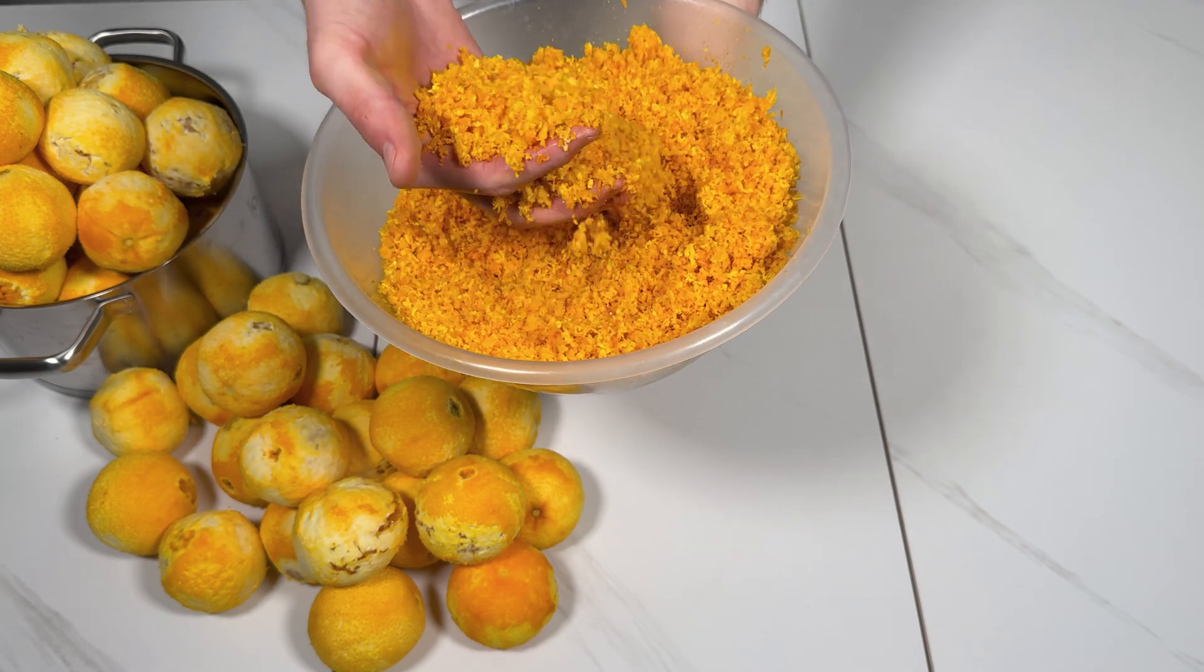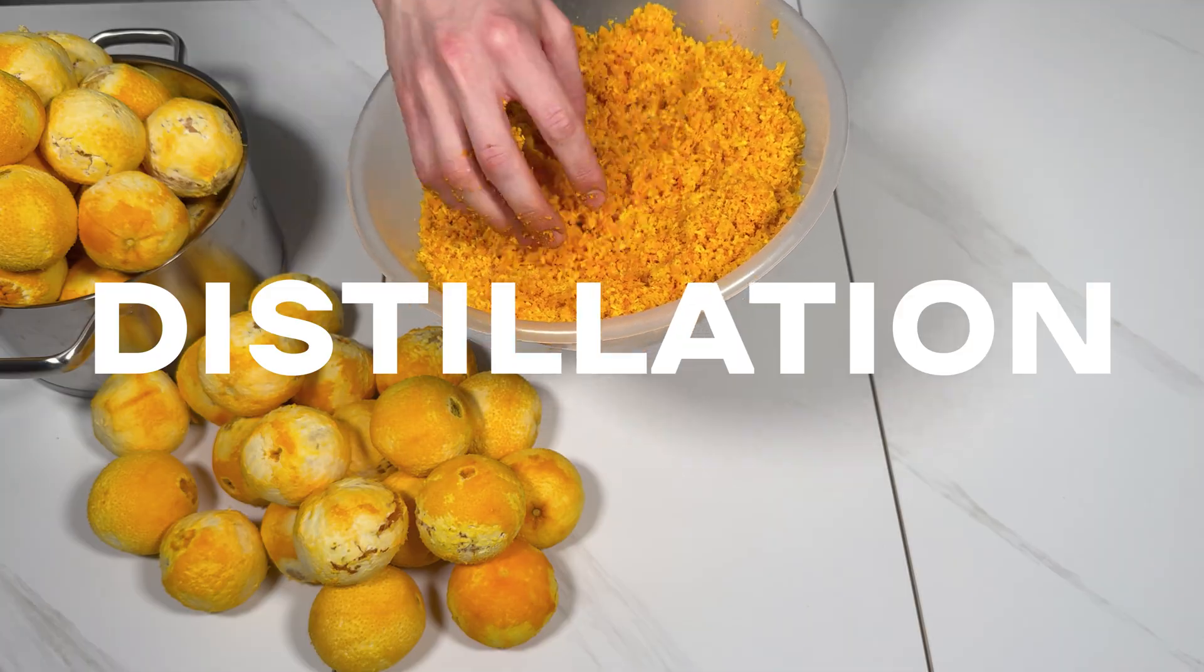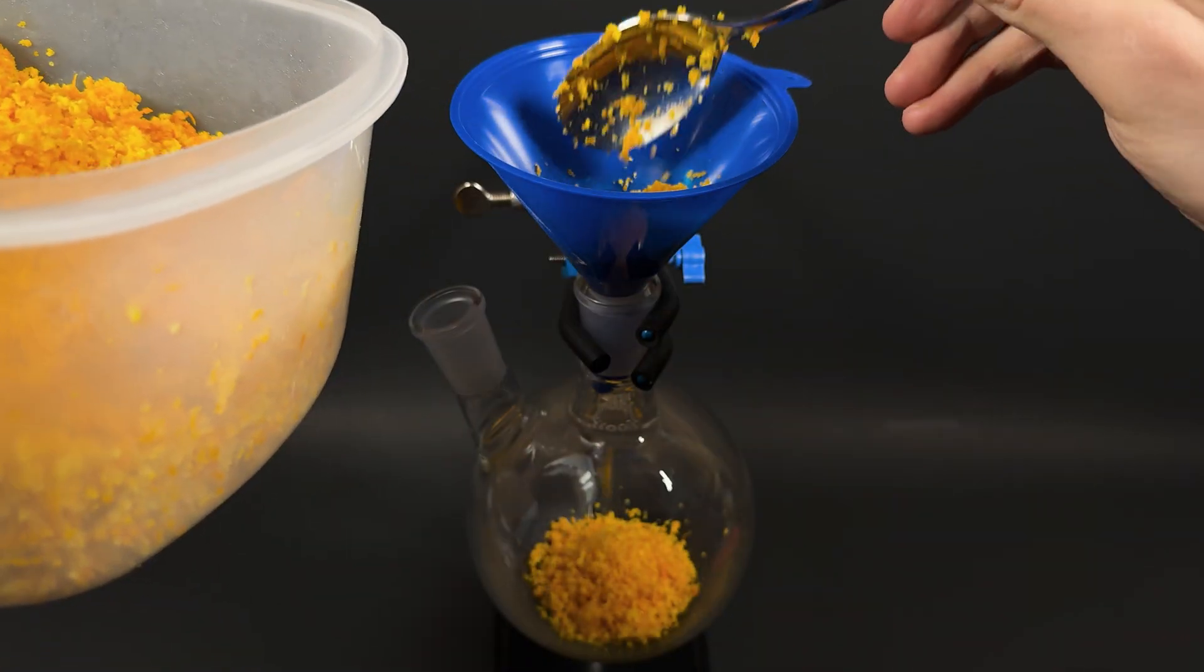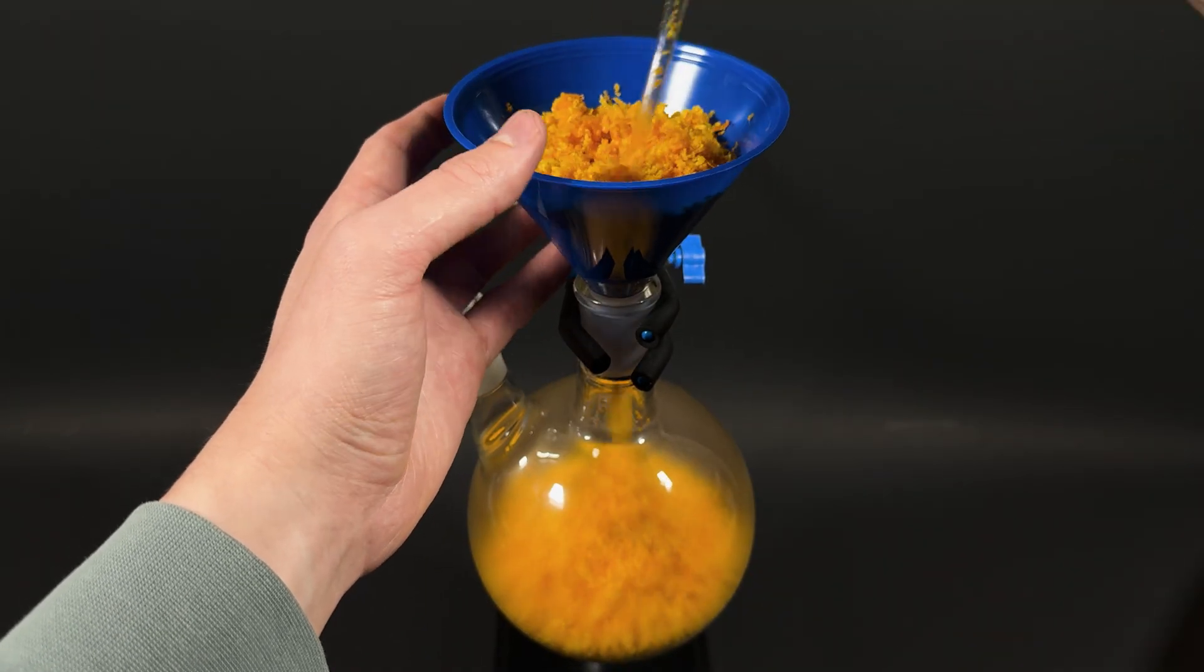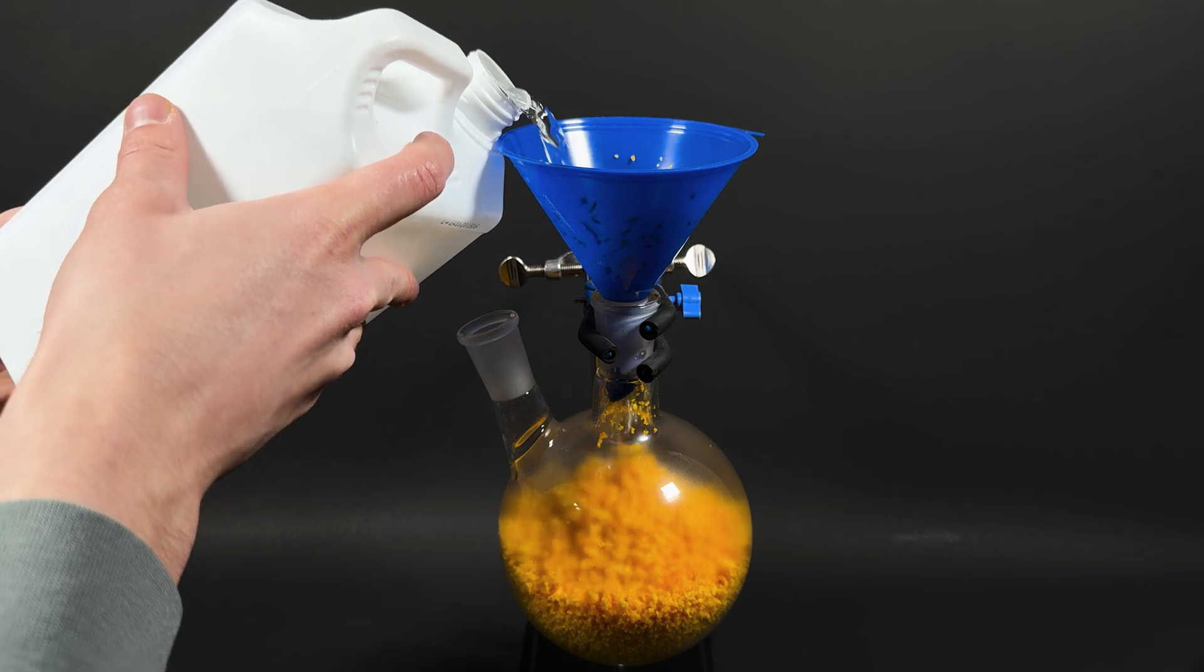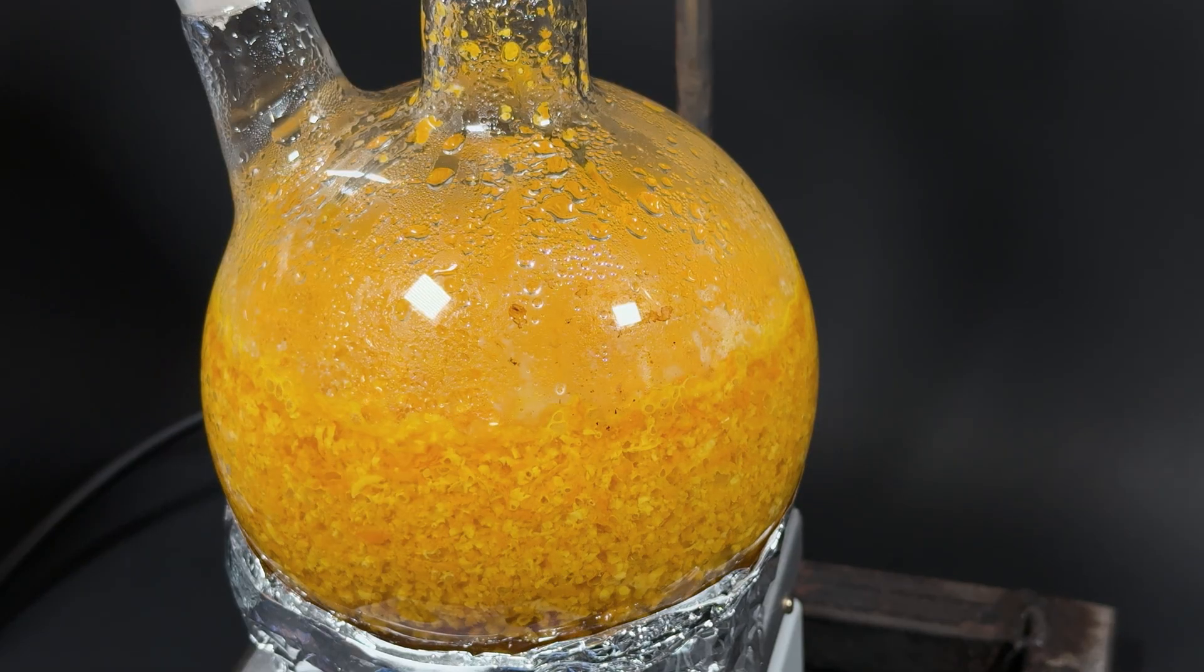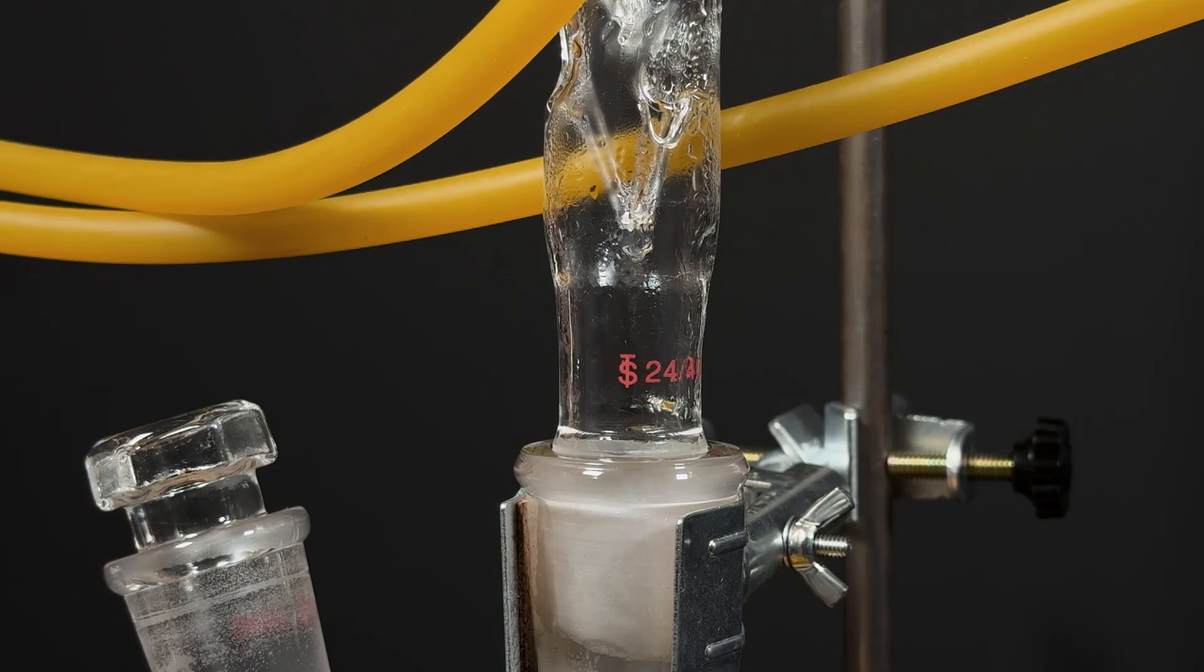Next task, extracting limonene from zest. The easiest way is via distillation. I transfer the zest mash into a 1-liter flask. Unfortunately, that's the biggest I've got, so I split it into two parts. The flask walls quickly fog up. That's the essential oil evaporating. I add water and turn on the heat. Gradually, the mixture boils, and with the steam comes what we need. Cloudy drops appear on the condenser walls. A mixture of water and limonene.